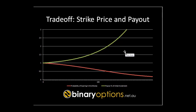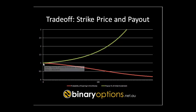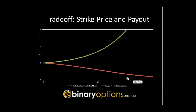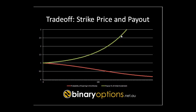Call options with a lower strike price have a higher probability of finishing in the money, as you can see from the chart. A call option with a strike price equal to zero will have a 100% probability of paying out — it will always pay out. As we increase the strike price, the probability of finishing in the money will decrease, and conversely the payout associated with that option should increase.